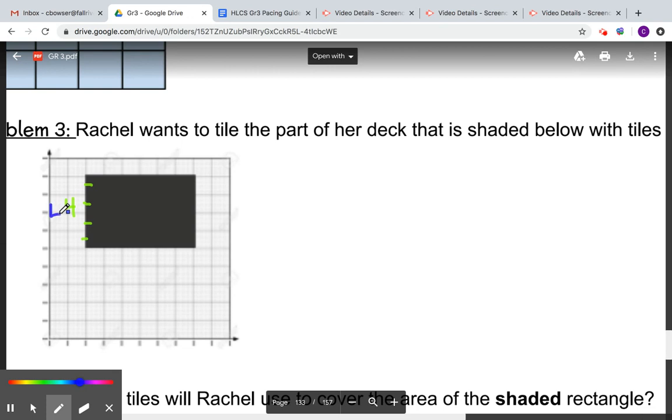Now let's look here: one, two, three, four, five, six. This part is six feet. So to figure out how much is inside here, what's the area of the shaded part, I'm gonna multiply my length times my width.